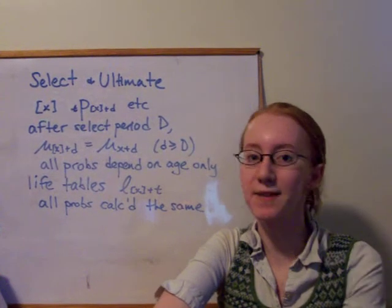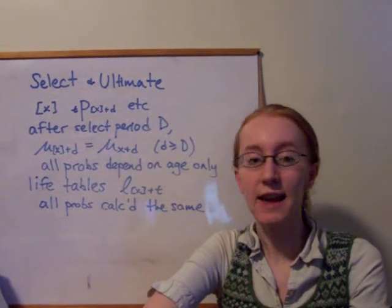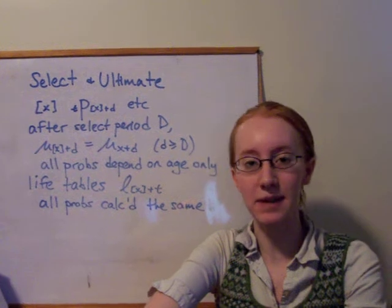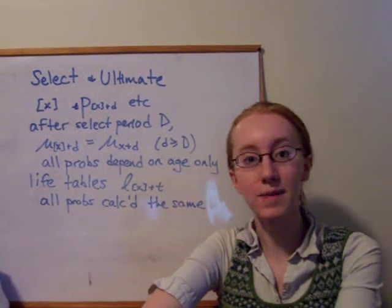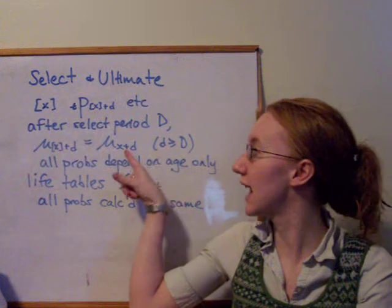After that point, so if the duration since selection has been larger than or equal to D, then we now don't care about the age at which the person was selected. And their mortality experience and all of their probabilities are going to be exactly equal to any probabilities for someone who is just age x plus d.